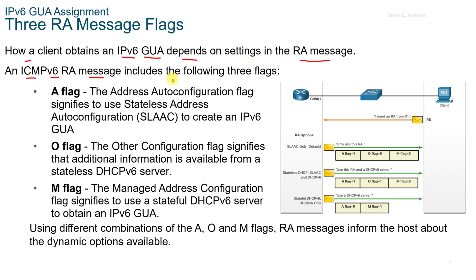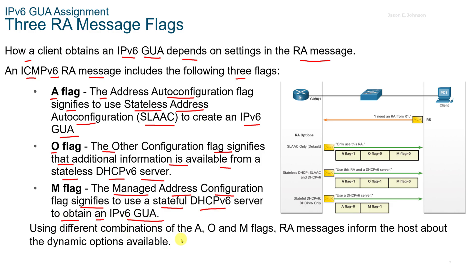An ICMPv6 message includes the following three flags. The A flag — the address auto-configuration flag — signifies to use Stateless Address Auto Configuration, or SLAAC, to create the IPv6 GUA. The O flag — the other configuration flag — signifies that additional information is available from a stateless DHCPv6 server. The M flag — the managed address configuration flag — signifies to use a stateful V6 server to obtain the GUA. Using different combinations of the A, O, and M flags, RA messages inform the host about the dynamic options available.